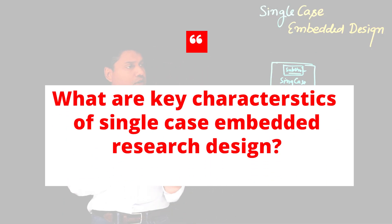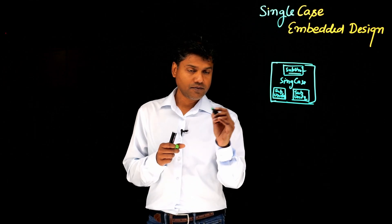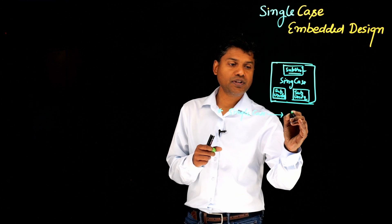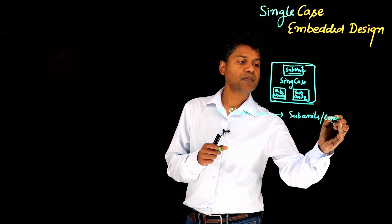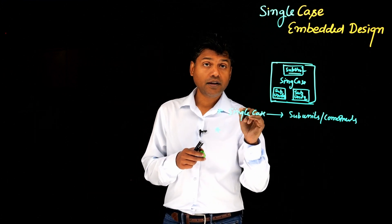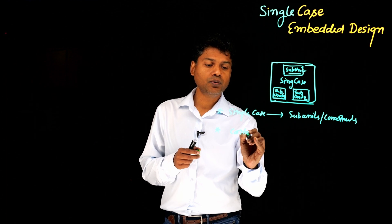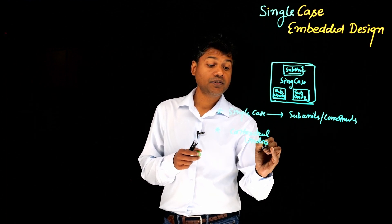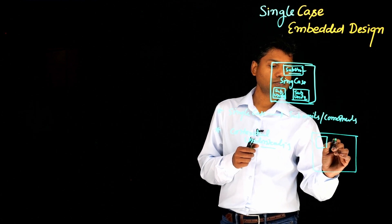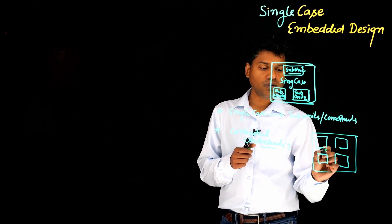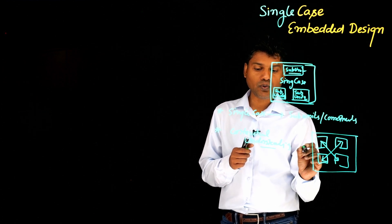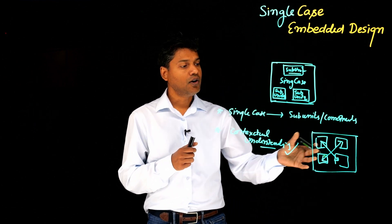Now, let's think about what are some key characteristics of this design. First of all, the focus is obviously a single case, but along with the single case, you are also focusing on subunits or components of that case — of the phenomenon that you are trying to focus on. This single-case embedded research design helps you to get more contextual understanding of the case, because you are not only focusing on the single case, but also on the subunits and subcomponents within the case, and you try to understand the relationships between these various subunits. It helps you to get a very detailed, contextual understanding of the single case.